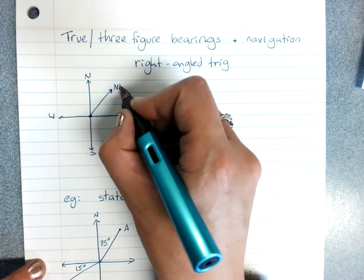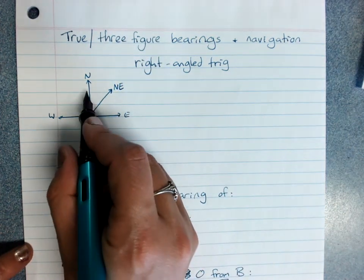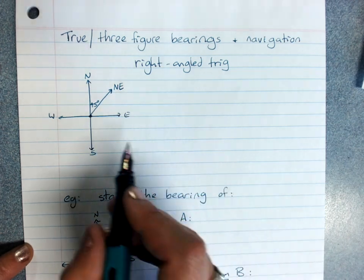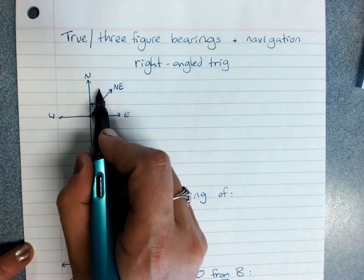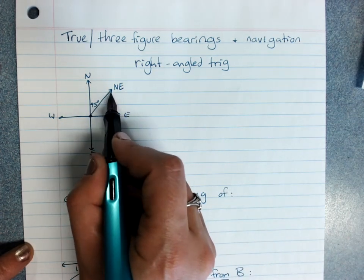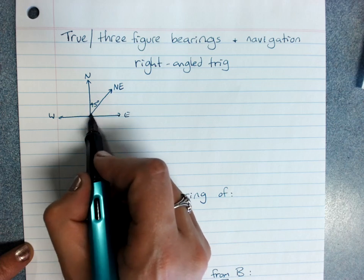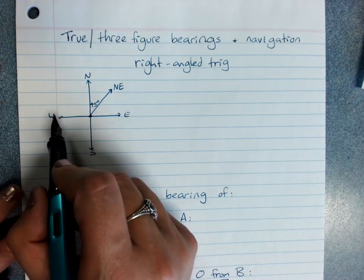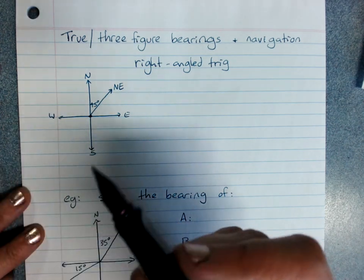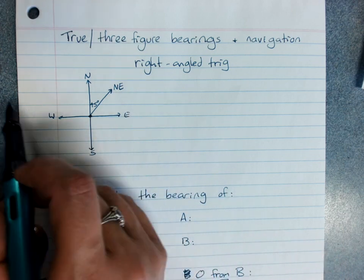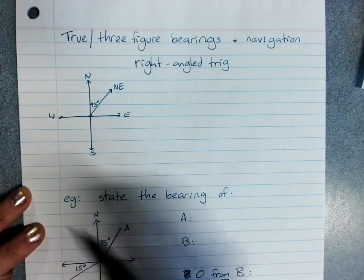North-east is exactly halfway between north and east, so obviously we've got 45 degrees in there. If we had north-north-east, halfway between north and north-east, that would be half of 45, so 22 and a half. And we'll have to understand and give bearings and then use them in navigation.